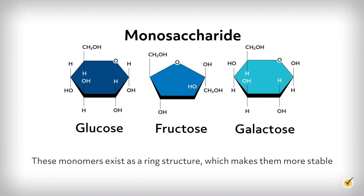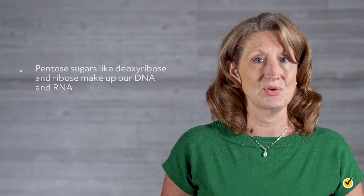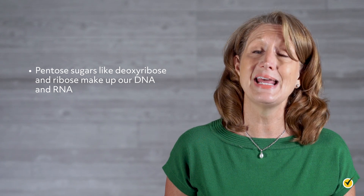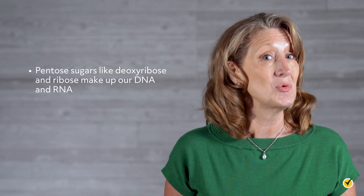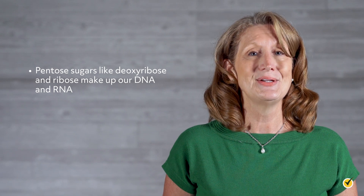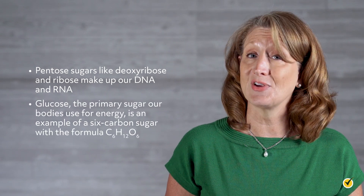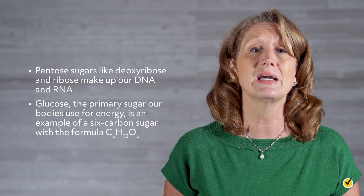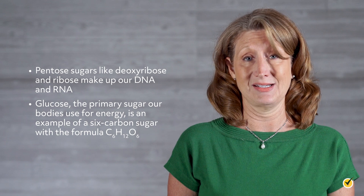These monomers exist as a ring structure, which makes them more stable. Pentose sugars like deoxyribose and ribose make up our DNA and RNA, so we definitely don't want those sugars to be unstable. Glucose, the primary sugar our bodies use for energy, is an example of a six-carbon sugar with the formula C6H12O6.